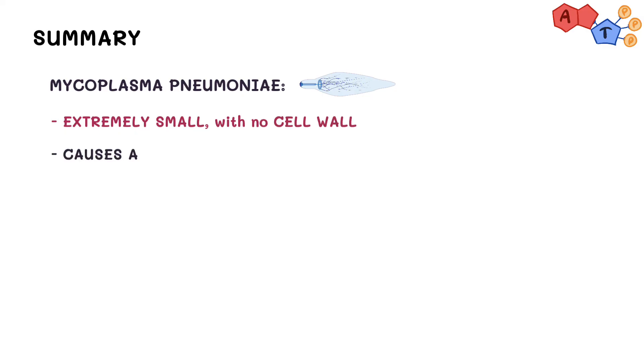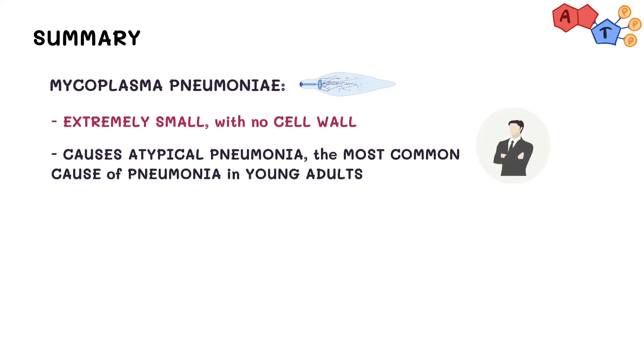Alright, to sum up, today we've talked about mycoplasma pneumoniae. We've said that it's an extremely small organism characterized by the absence of a cell wall. It primarily causes atypical pneumonia, which is the most common cause of pneumonia in young adults. It's also responsible for outbreaks in groups with close contacts such as families and military personnel.